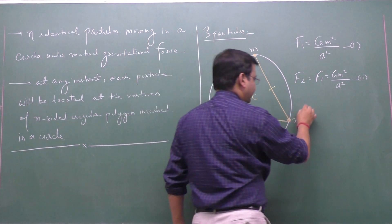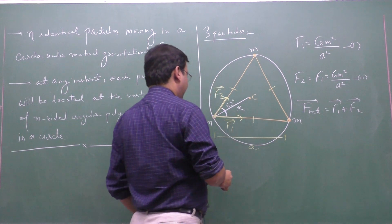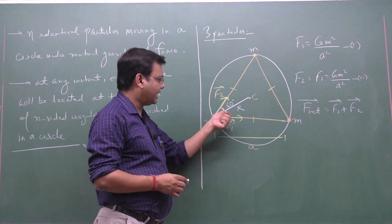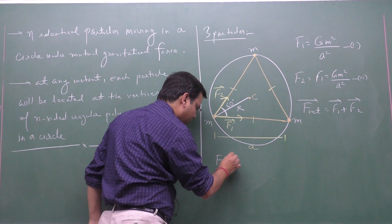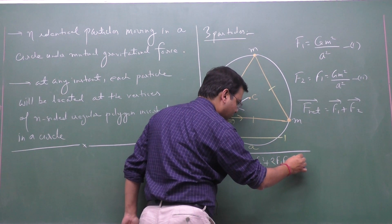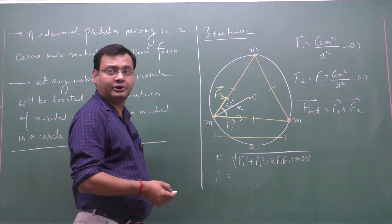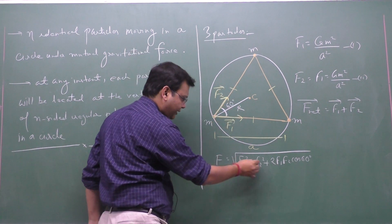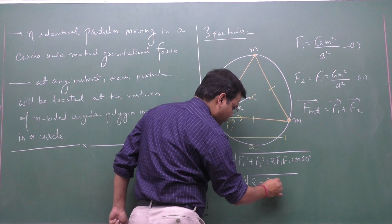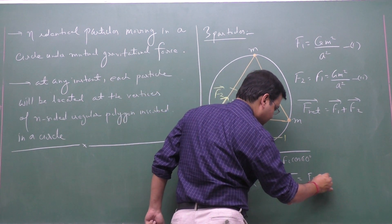The net force F = √(F1² + F2² + 2·F1·F2·cos60°). Since F1 = F2, taking F1 as a common factor gives F1·√(2 + 2·cos60°). Since cos60° = 1/2, this becomes F1·√(2 + 1) = F1·√3.